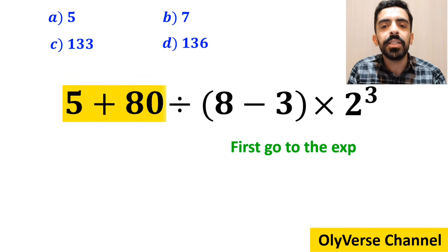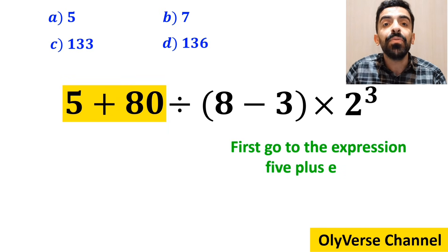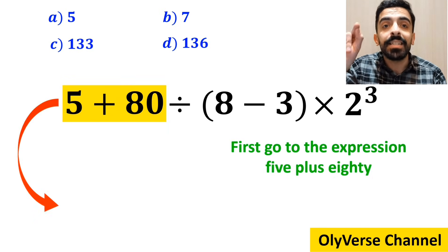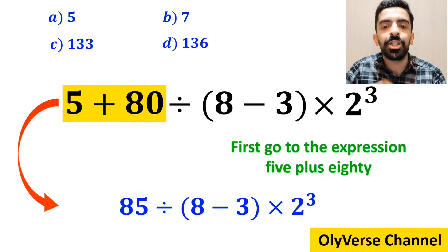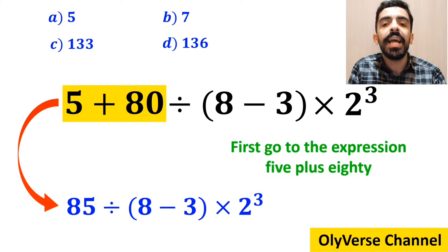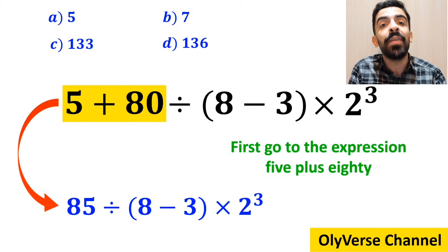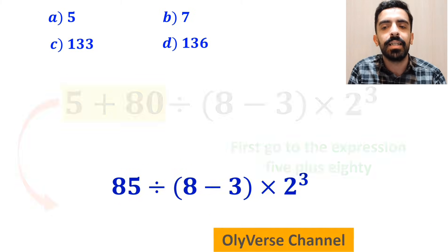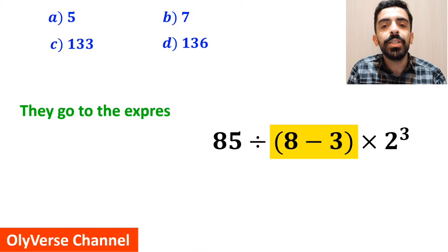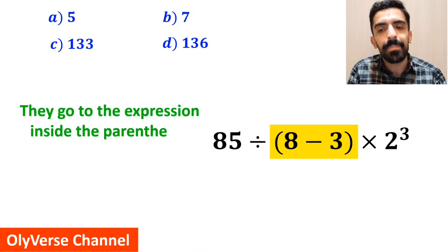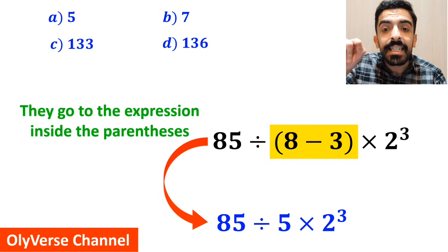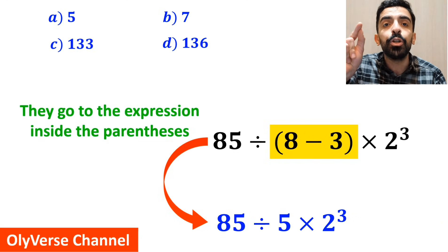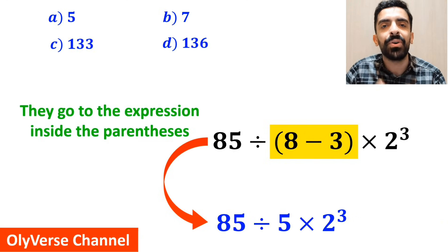Many people, to solve this question, first go to the expression 5 plus 80, and instead of this expression, they write 85 divided by 8 minus 3 inside the parenthesis, then times 2 to the power of 3. In the next step, they go to the expression inside the parenthesis and simplify this expression to 85 divided by 5 times 2 to the power of 3.